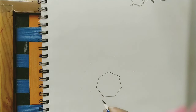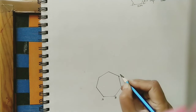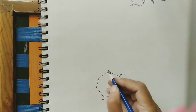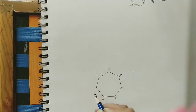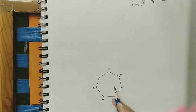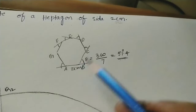This is the required heptagon. Count the sides: one, two, three, four, five, six, seven. Give the vertices capital letter names: A, B, C, D, E, F, G.